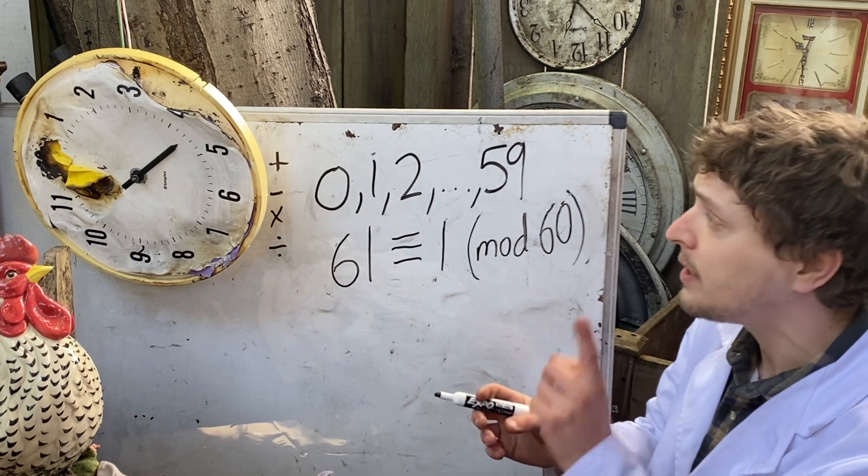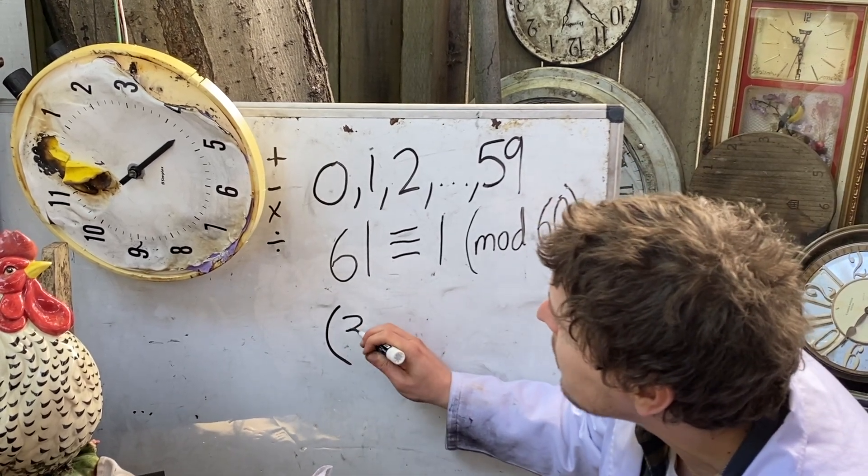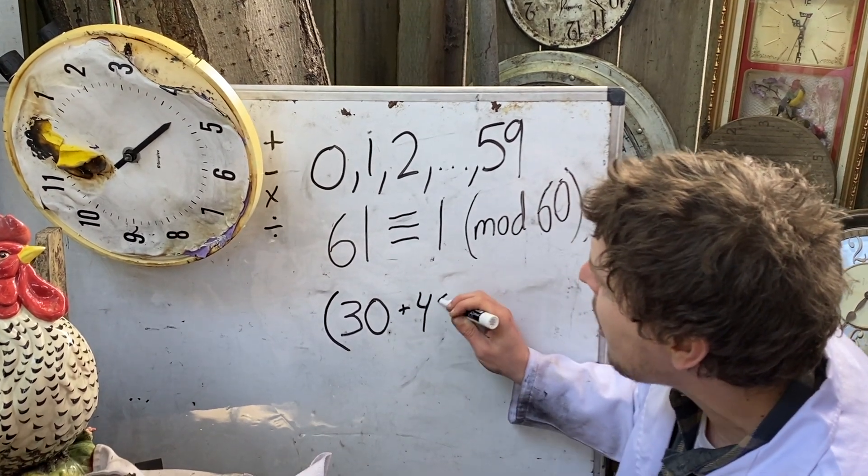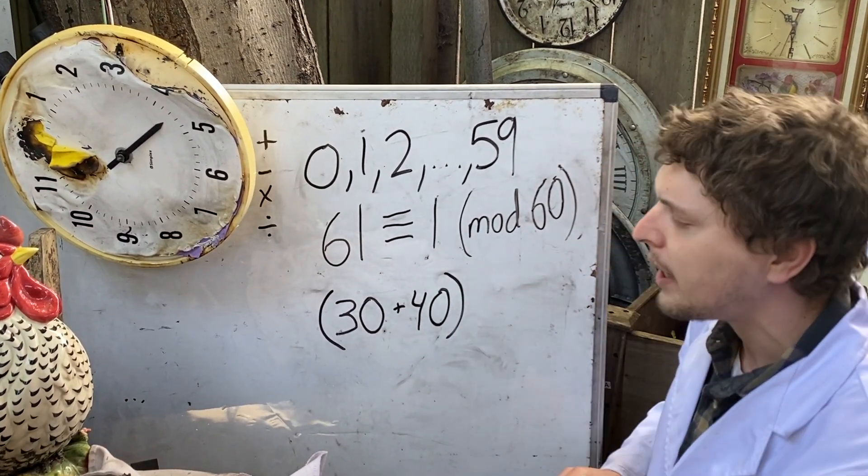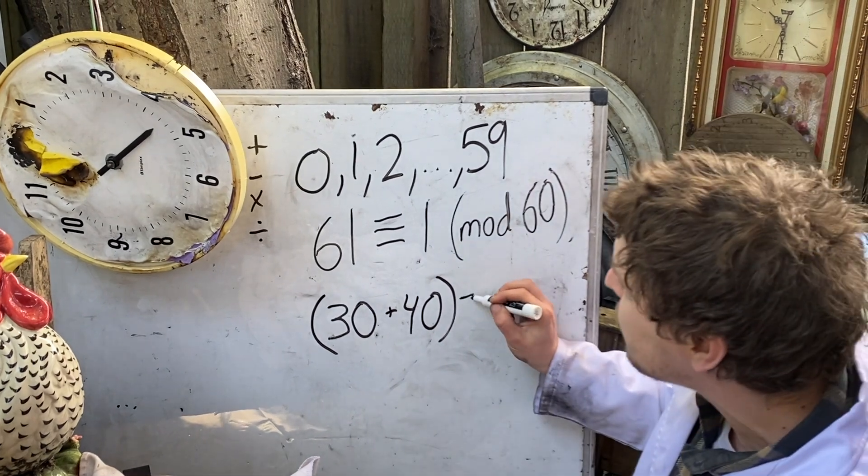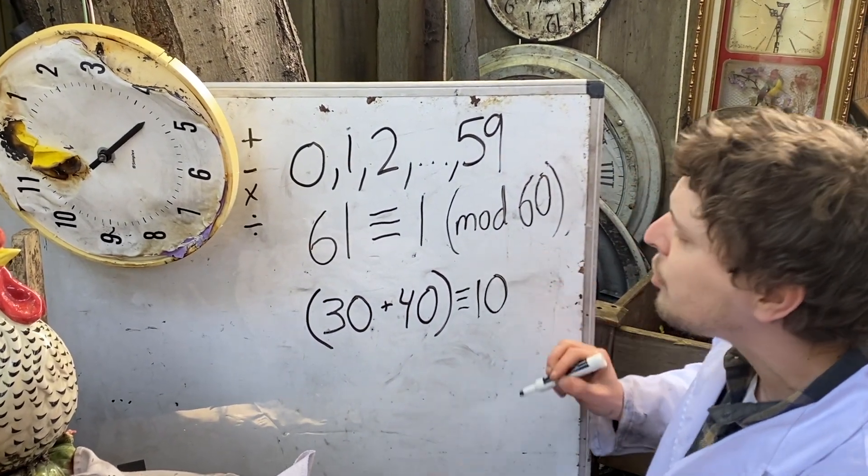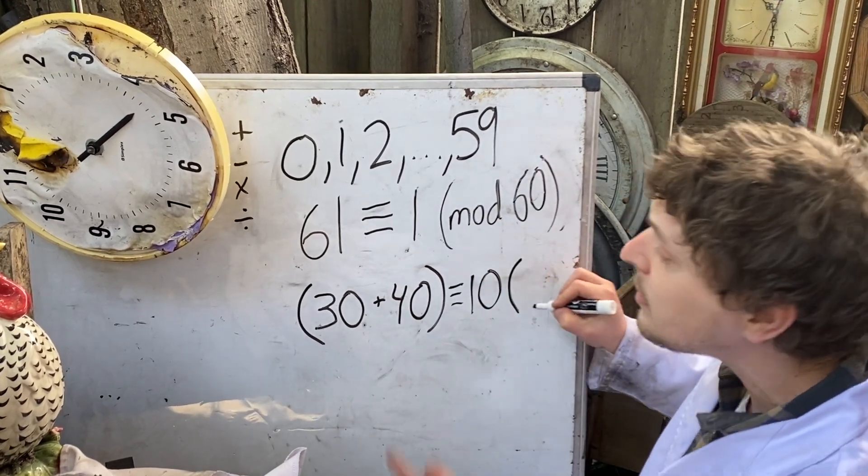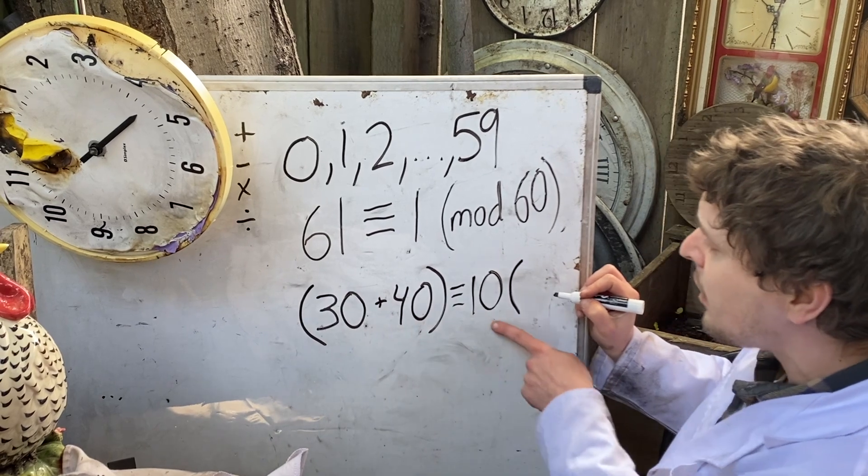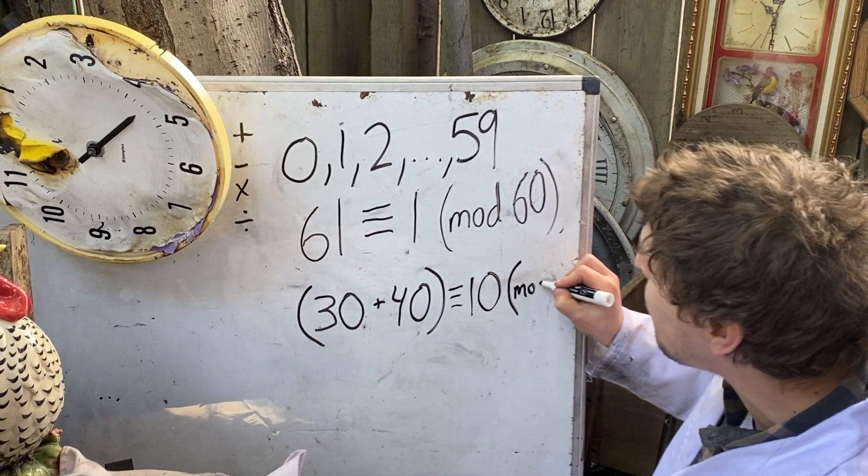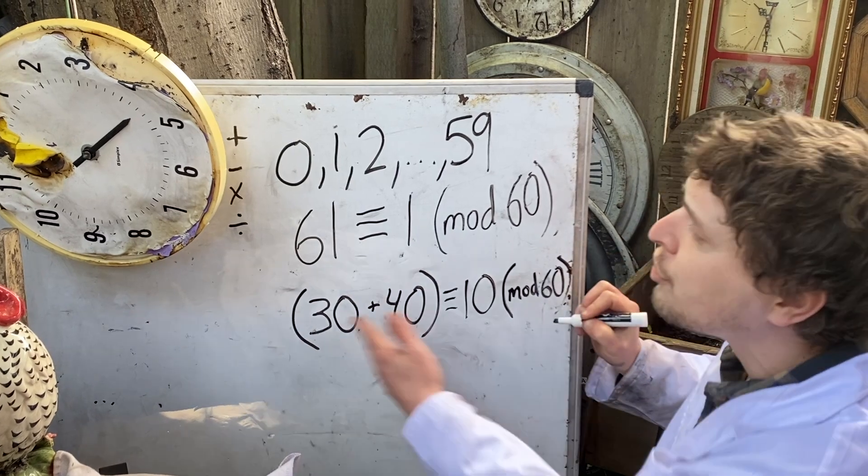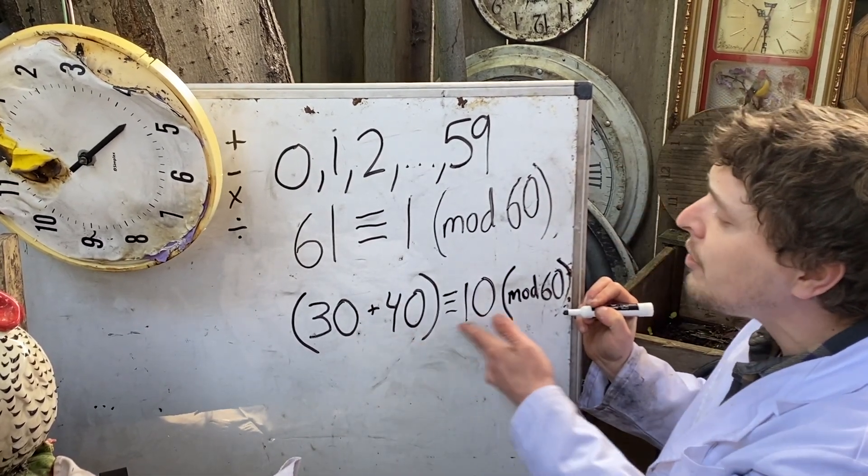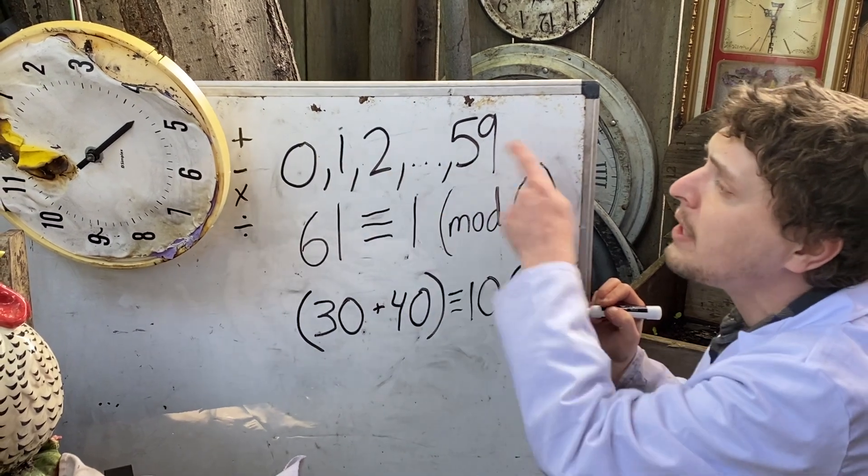Well, we can do that with addition. If I do something like, what is 30 minutes plus 40 minutes? Well, that moves 70 minutes, but that's equivalent to moving 10 minutes because you cycle back around after the first 60. So we could say that that addition is congruent to 10 mod 60. And no matter what two integers I added together, I would end up congruent to one of these values.